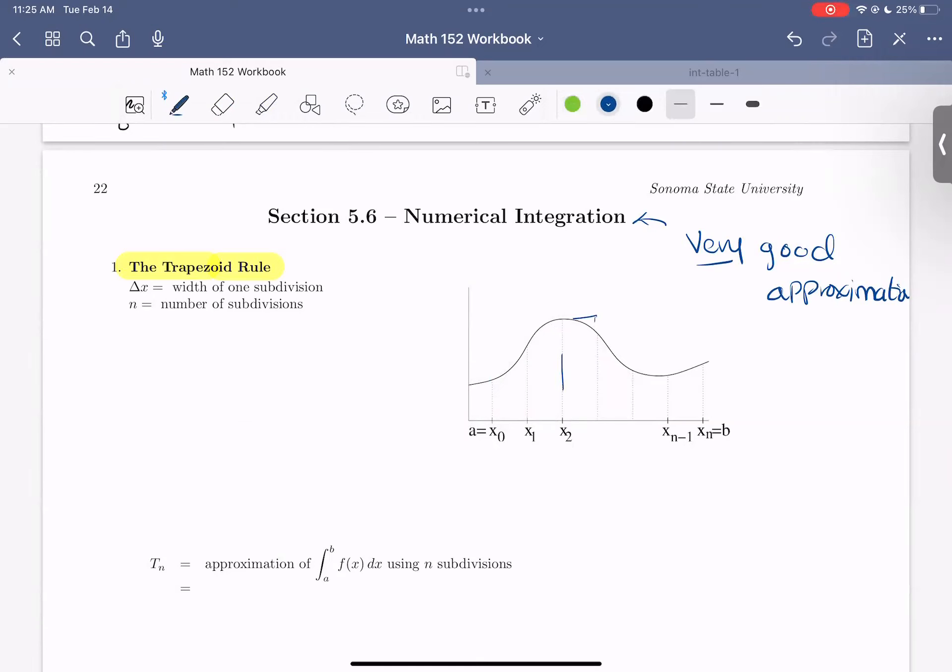So what is a trapezoid? Well, a trapezoid is a quadrilateral, so a four-sided shape with only one set of parallel sides.